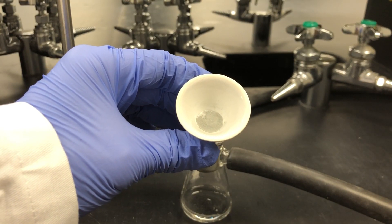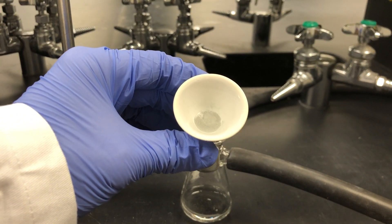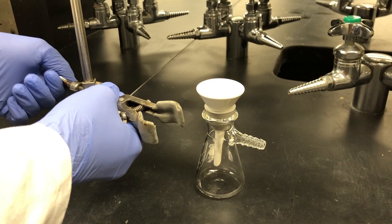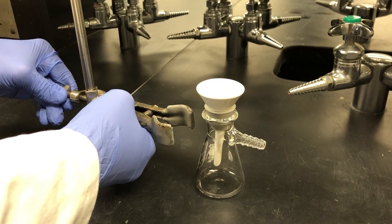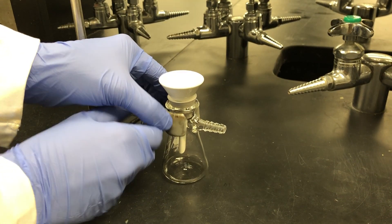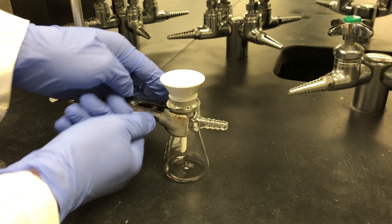To set up your vacuum filtration system, first place your Hirsch funnel and the rubber stopper securely into the top of the filter flask. Before you attach your vacuum tubing, you should secure your filter flask to the support stand on your bench using a two-prong clamp. This is to make sure your flask stays in place when filtering.